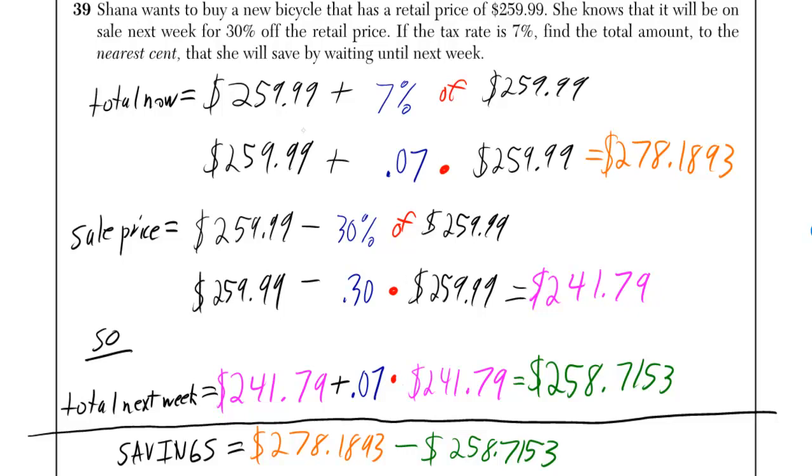The total now is $259.99 plus 7% of $259.99. You can change 'of' to a times in this case, and 7% you can change to .07. We move the decimal two times to the left. If it was right there, you move it one time, two times, put in a zero there, and you get .07.